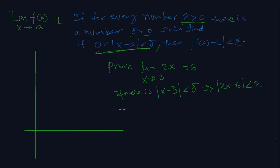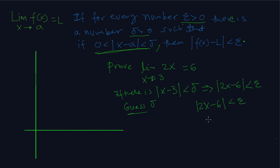Usually, if you have a step, you compare the step. We want the absolute value of 2x minus 6 to be less than epsilon. We factor out a 2, giving us 2 times the absolute value of x minus 3 is less than epsilon.